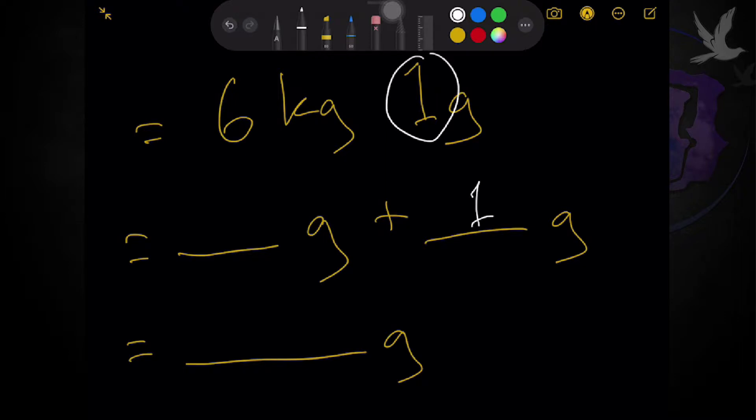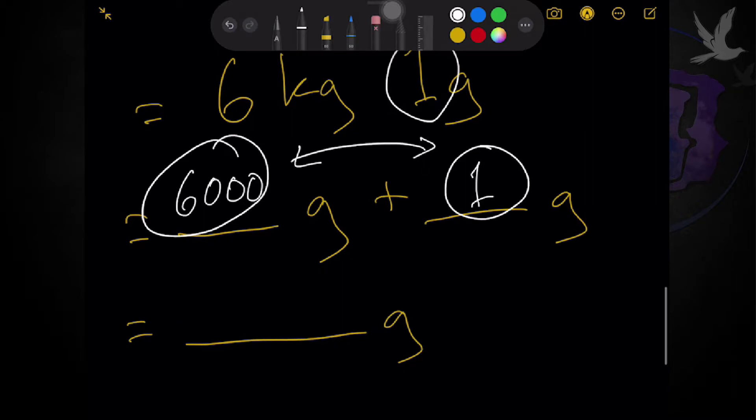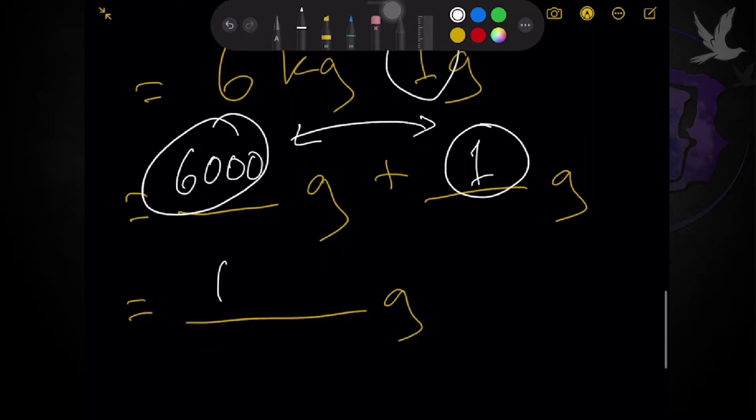And for 6 kilograms, converting 6 kilograms to grams, you already know that. So, this should be equivalent to 6,000 grams. So, putting both together, that's equivalent to 6,001 grams. Okay. So, ganyan lang.